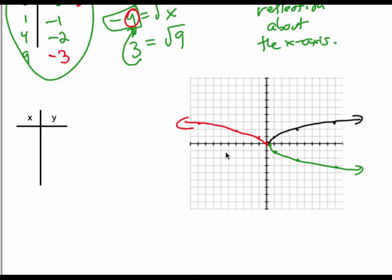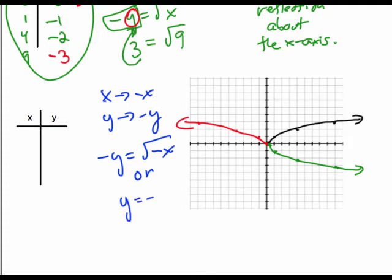And so finally, if I was to replace both x with negative x and y with negative y, so that my equation became this, or if you prefer to move the negative to the other side, that's going to cause both the original x's and y's to switch sign.